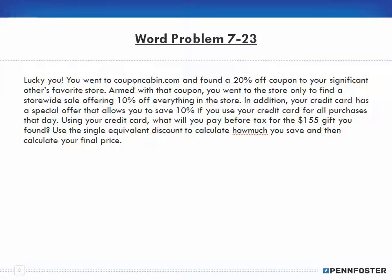Word problem 7-23: You went to CouponCabin.com and found a 20% off coupon to your significant other's favorite store. Armed with that coupon, you went to the store only to find a storewide sale offering 10% off everything. In addition, your credit card has a special offer that allows you to save 10% if you use your credit card for all purchases that day. What will you pay before tax for the $155 gift you found? Use the single equivalent discount to calculate how much you save and your final sale price.